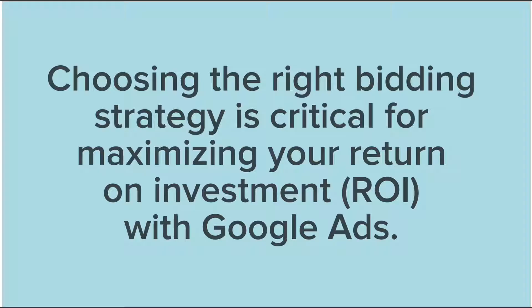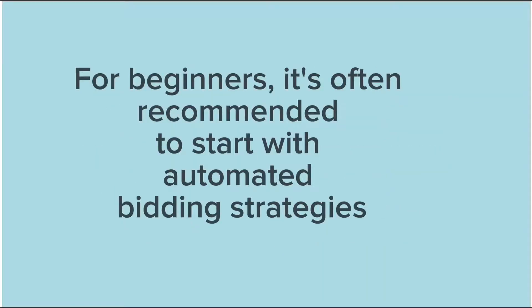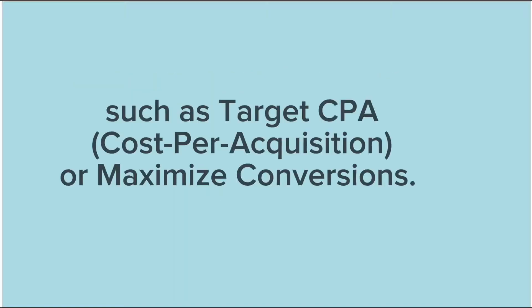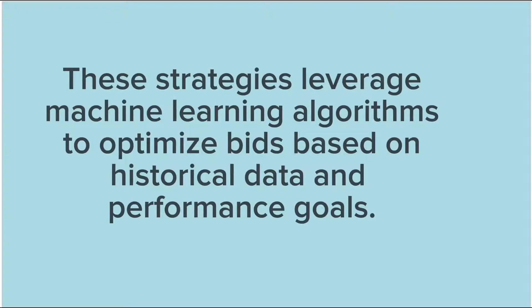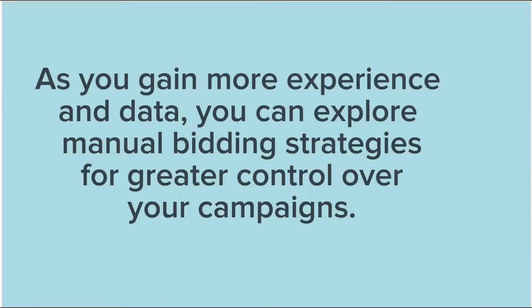Choosing the right bidding strategy is critical for maximizing your return on investment. For beginners, it's often recommended to start with automated bidding strategies such as target CPA (cost per acquisition) or maximize conversions. These strategies leverage machine learning algorithms to optimize bids based on historical data and performance goals. As you gain more experience and data, you can explore manual bidding strategies for greater control over your campaigns.